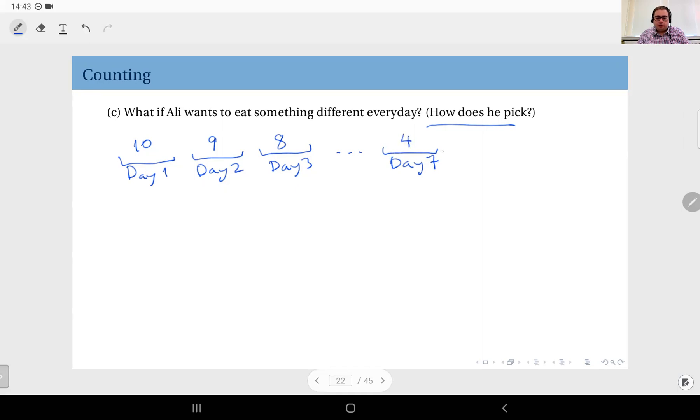So when you multiply all these you get 10 factorial divided by 3 factorial as the number of different sequences that has distinct elements—no element is repeated here.